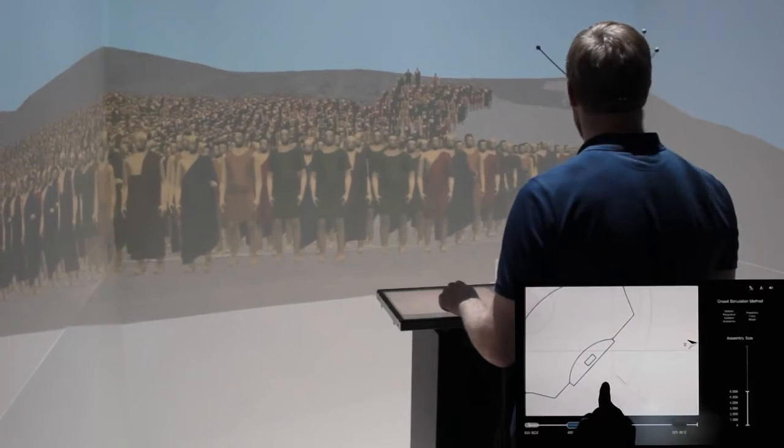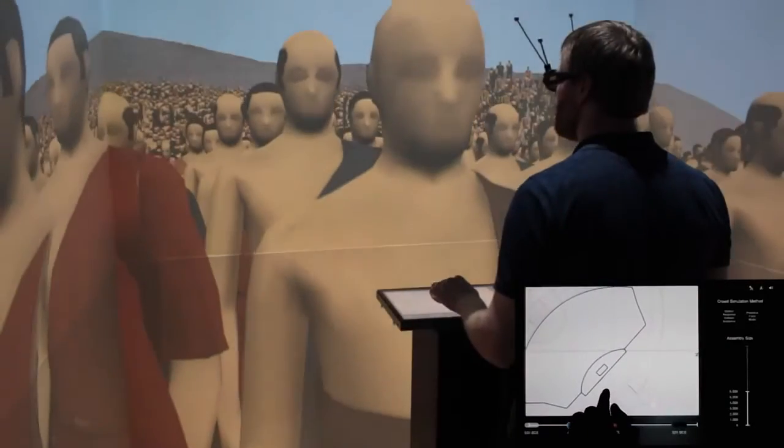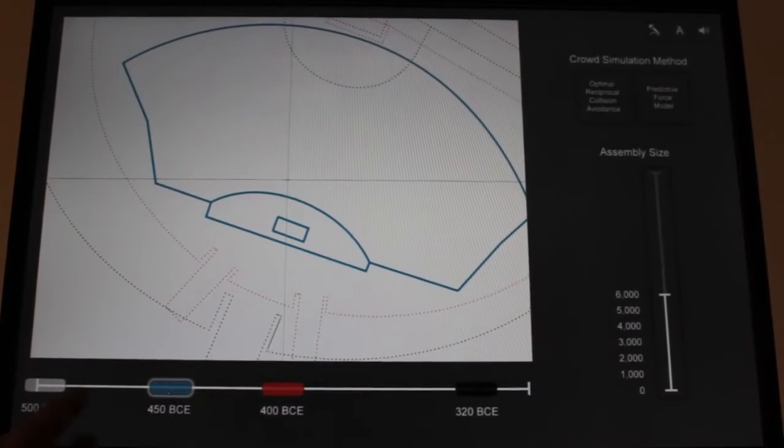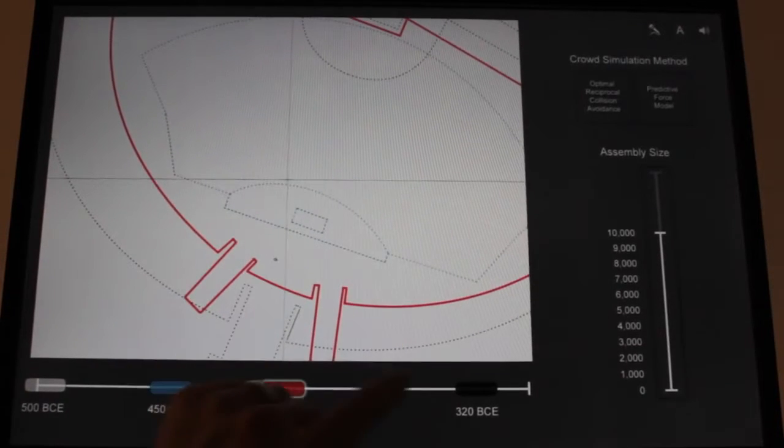During travel, the system adjusts the vertical position of the Pnyx models to maintain contact between the user's feet and the virtual ground. Plan views of the multiple historical phases of the Pnyx are superimposed on the world-in-miniature to support comparative analysis. Tapping the timeline changes the phase.